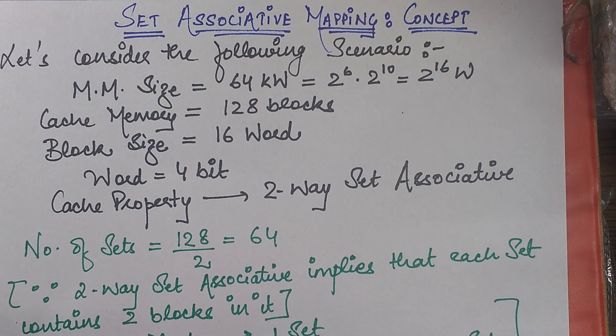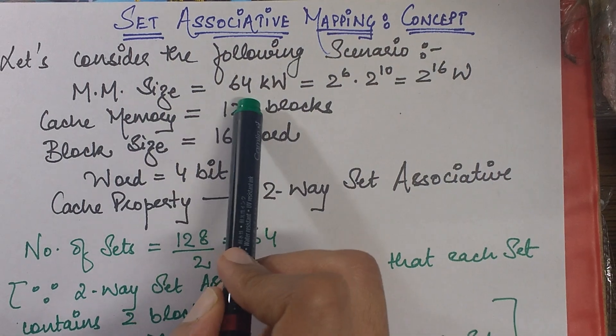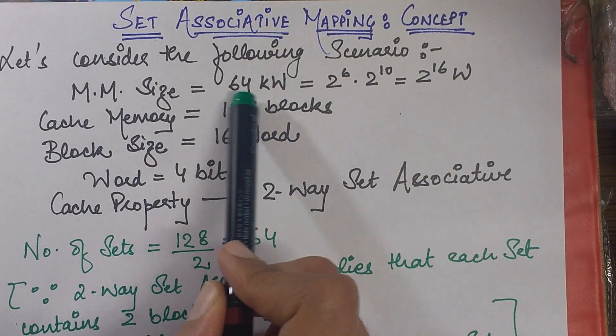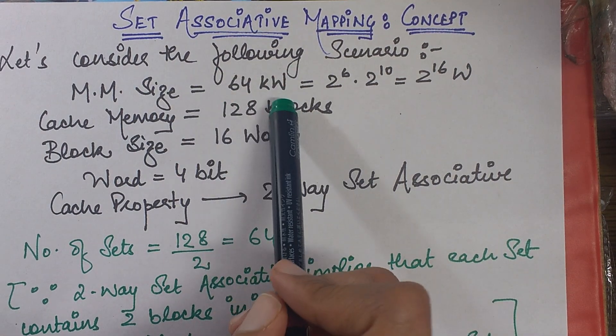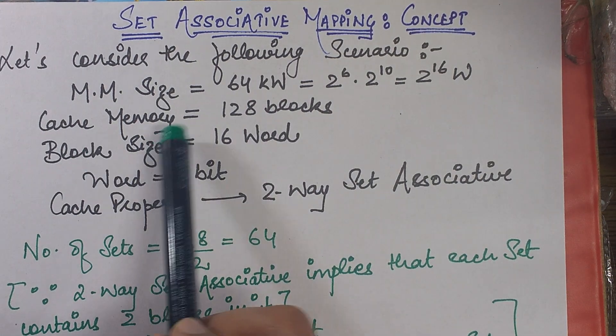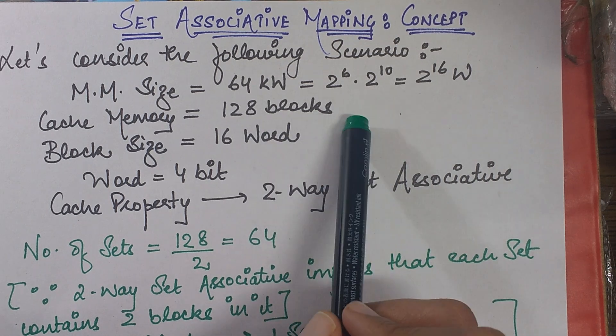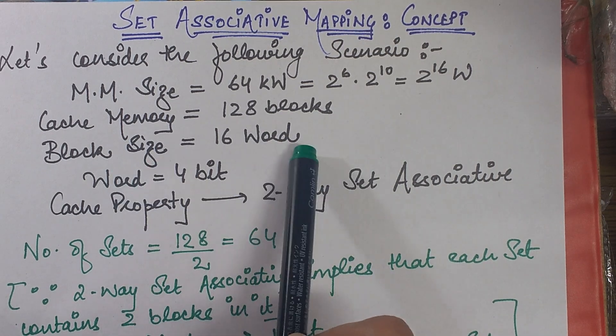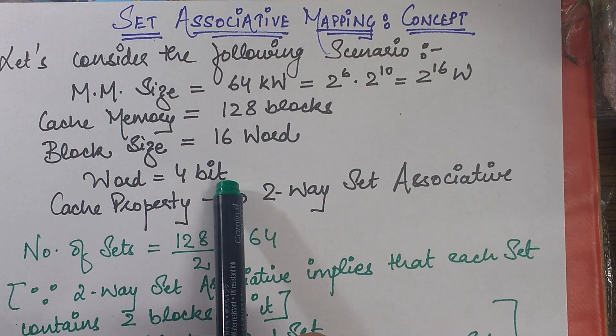The scenario that I'm considering is that I have a main memory of size 64 kilowatts. Now if I just convert it into the powers of 2, I get to know that this is 2 to power 16 words. Similarly cache memory is of 128 blocks, block size is 16 words, word is of 4 bit.